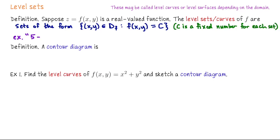For example, you may call the five level set the set of points in the domain satisfying the property that when plugged into f, the output is five.